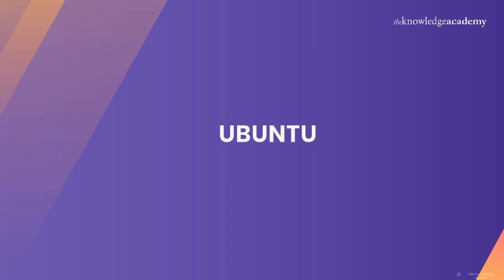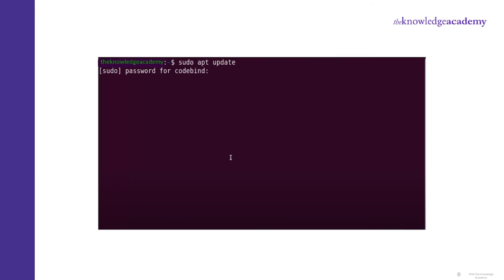Now let's move on to see how to install MySQL in Ubuntu. First, let's open the terminal. You can do this by pressing Ctrl+Alt+T on your keyboard or by searching for Terminal in the Applications menu. Once the terminal is open, let's begin by updating the package index to ensure we have the latest versions of the software.